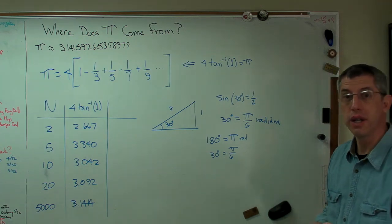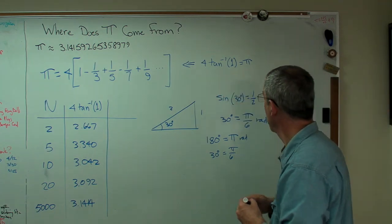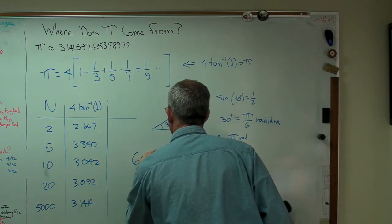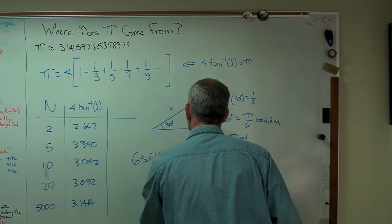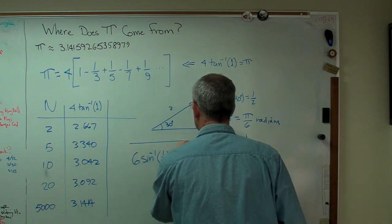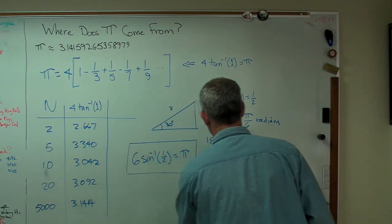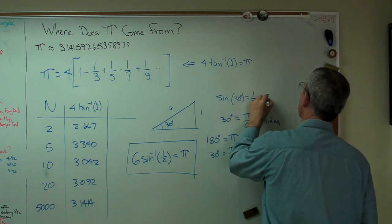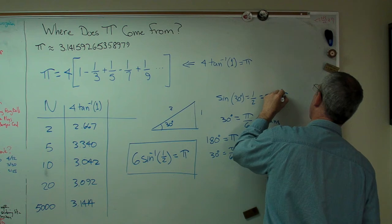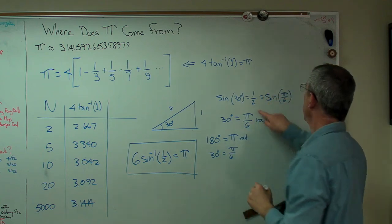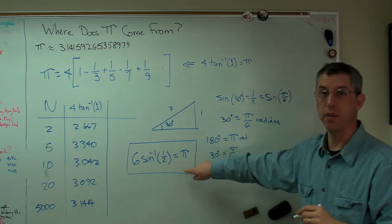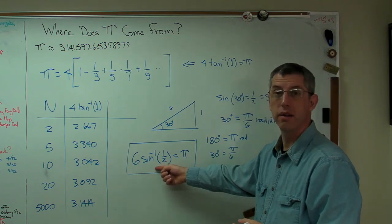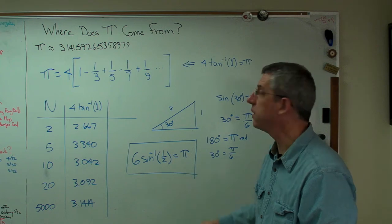Let's do the exact same thing we did up here and say that 6 times the inverse sine of 1 half must equal pi. And it does. If that's true, then that's got to be true. And there must be a Taylor series expansion for this. And there is.